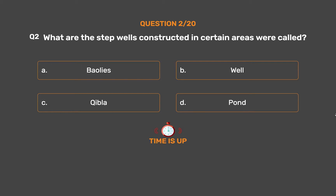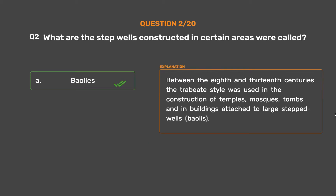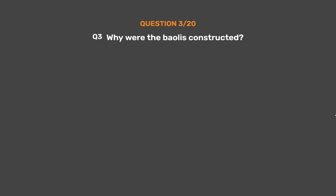The correct answer is Option A: Bawalese. Between the 8th and 13th centuries, the Trabeate style was used in the construction of temples, mosques, tombs, and in buildings attached to large stepwells called Bawalese.